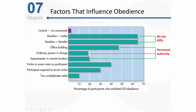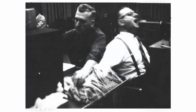These three variations tested factors related to the perceived authority or status of the authority figure. Another key factor influencing obedience rates had to do with the victim. When the learner had to be seated in the same room as the participant, overall obedience rates dropped to about 40 percent. In another variation, participants were required to touch the victim — specifically, to take the victim's hand and hold it down on a shock plate.